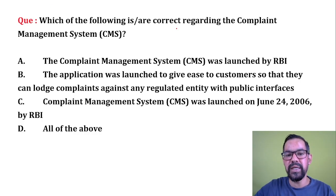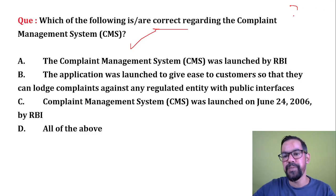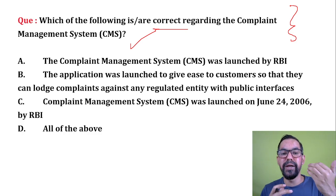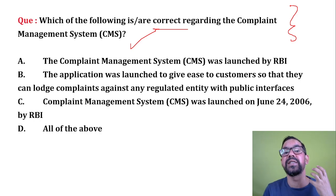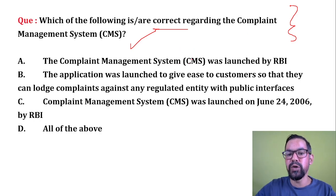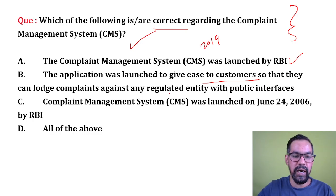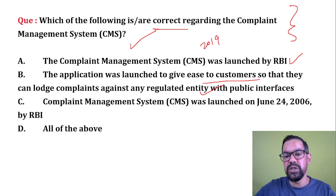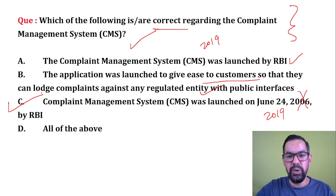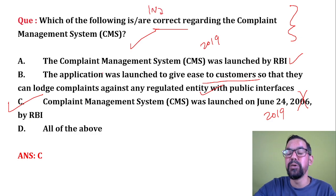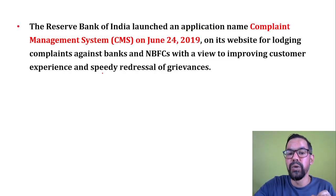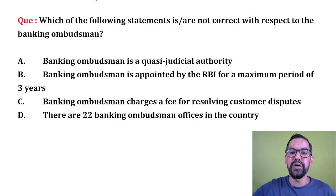Next question: Which of the following is correct regarding the Complaint Management System? It is an online portal where you can file complaints against a bank and monitor the status of your complaint. It was introduced by RBI and launched to give ease to customers so they can file complaints against any regulated entity with a public interface. Statement C — that it was launched on 24th June 2006 — is incorrect; it was launched on 24th June 2019.